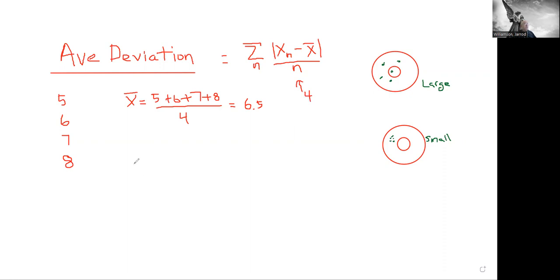So to get the average deviation, I'm going to go here: 5 minus 6.5, absolute value of that, plus 6 minus 6.5. Sorry for my penmanship, guys. Absolute value of that. Plus 7 minus 6.5, absolute value.